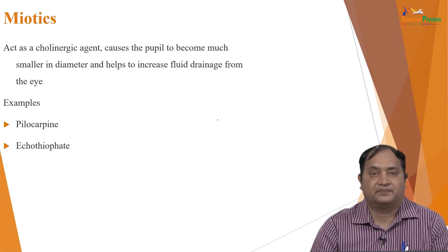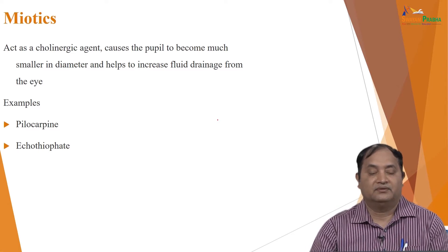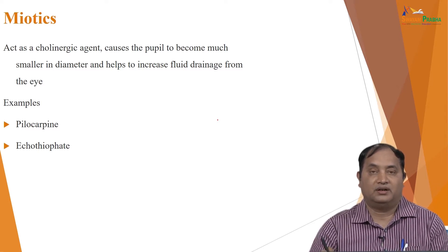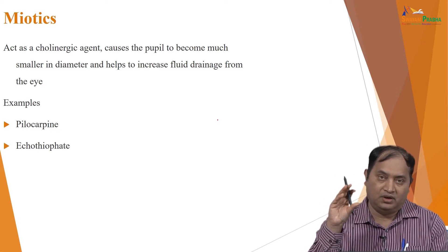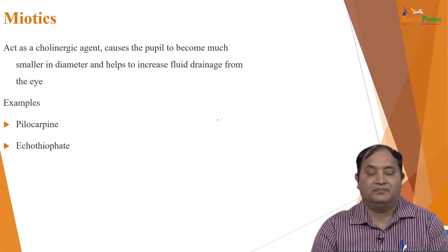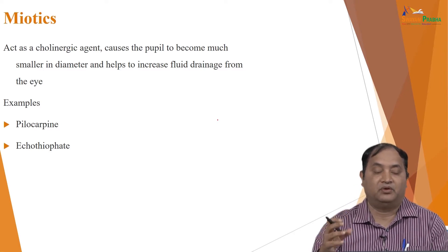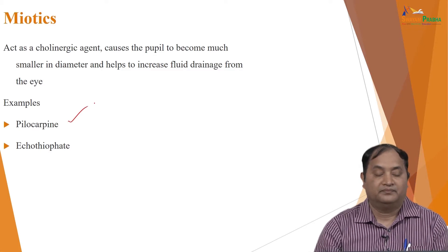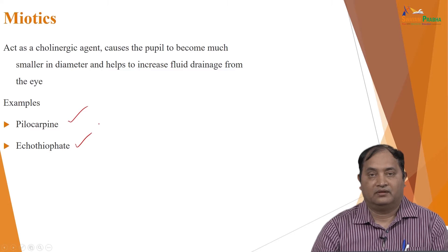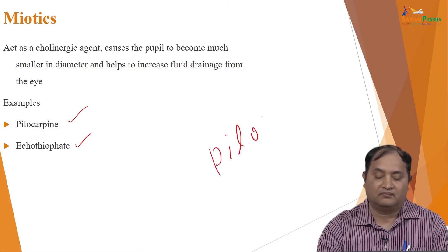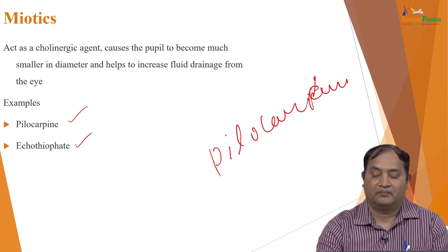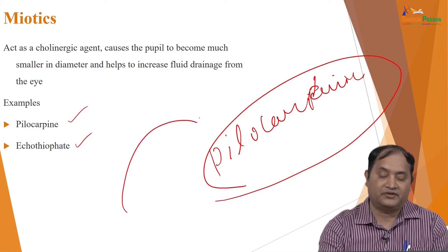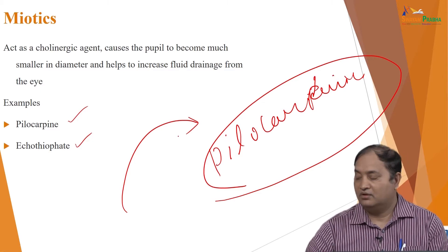What is the role of miotics? Miotics are basically cholinergic agents that cause the pupil to become much smaller in diameter. When the pupil becomes constricted, it helps to increase fluid drainage from the eye. Typically we use drugs like pilocarpine or echothiophate — pilocarpine is the most commonly used. Miotics help in drainage of aqueous humor and thereby reduce ocular pressure.